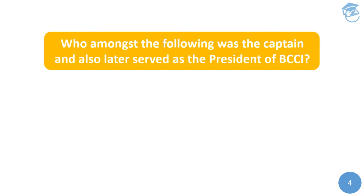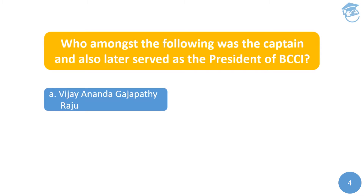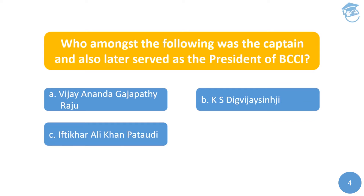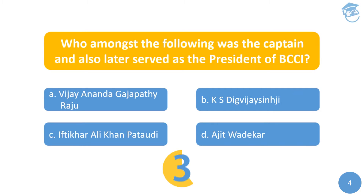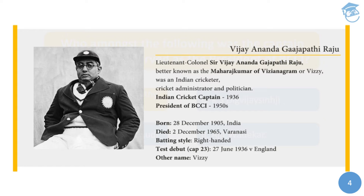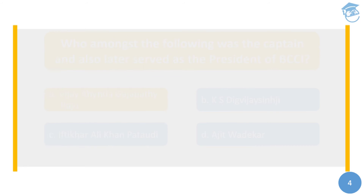The fourth question: who amongst the following was the captain and also later served as the president of BCCI? Your options are: A) Vijay Ananda Gajapati Raju, B) Kumar Shri Digvijay Singh, C) Iftikhar Ali Khan Pataudi, or D) Ajit Wadekar. The answer is Vijay Ananda Gajapati Raju, the cricketer known as Vizzy or Maharaj Kumar of Vizianagaram. He was the captain of the Indian cricket team in the 1936 England tour and later in the 1950s he was the president of BCCI.